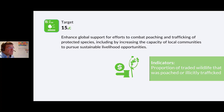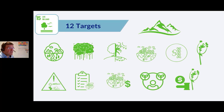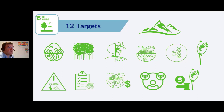So there we have it — 12 targets for Life on Land, all very important and all of us can relate to them in some way. That concludes the five SDGs that relate to the planet. We will be looking at each of the SDGs individually in their own unit later on.